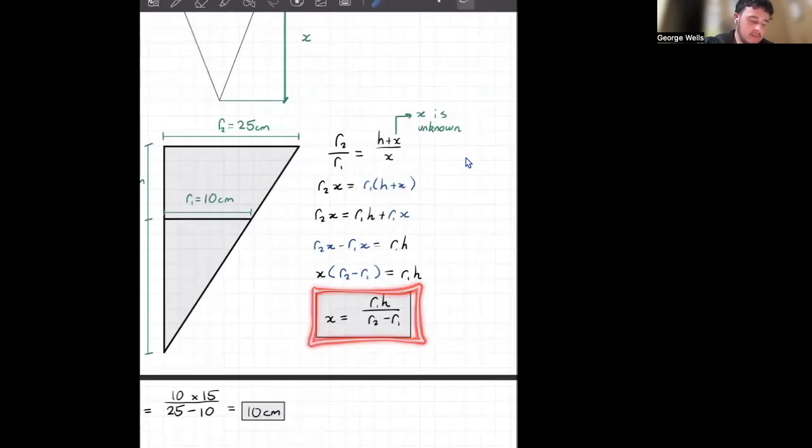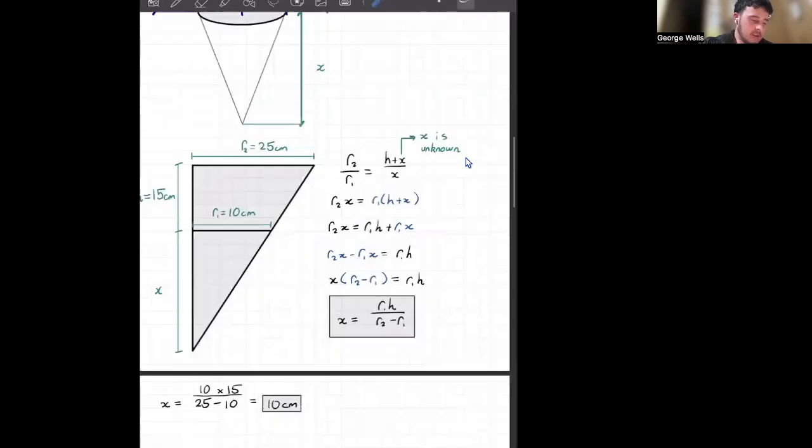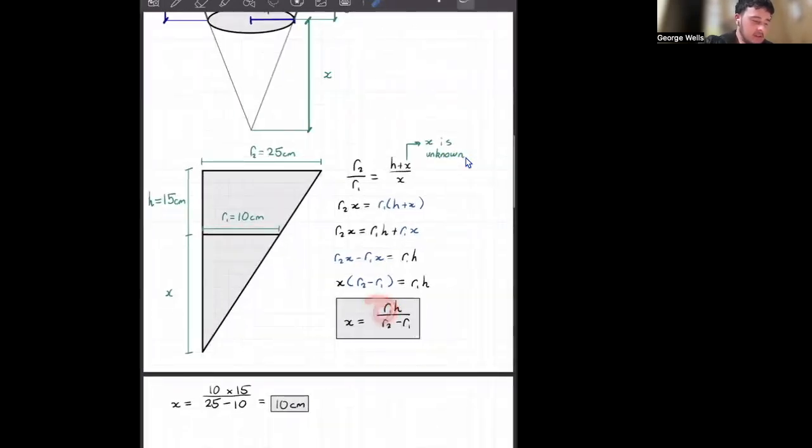And then I'm just dividing by r2 over r1 to get x by itself. We're left with this beautiful equation. x is equal to all this. And now all we need to do is put in some numbers to this to find out what x is equal to.